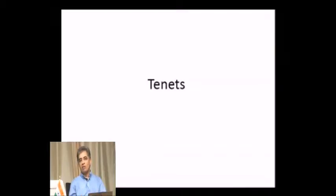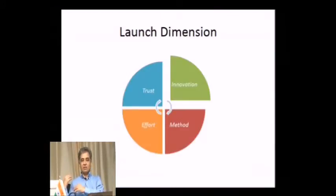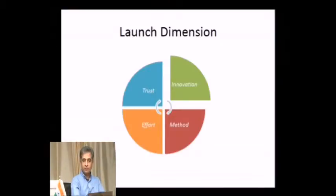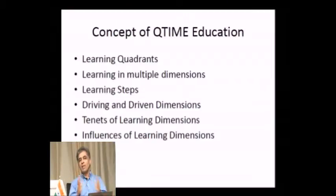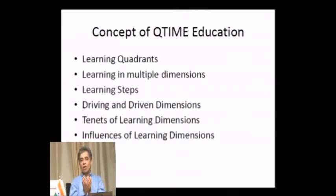What is the core value of each dimension? Trust is a sway dimension — higher the trust, you sway more towards it; lower the trust, you sway away. The tenet of the innovation dimension is launching new products and services every day. That is the core understanding: launching something new. Together — learning quadrants, multiple dimensions, learning steps, what each dimension drives, the core values — all constitute Q-time education.